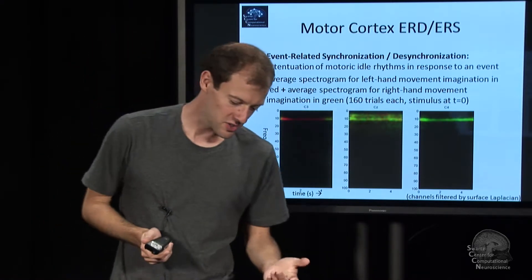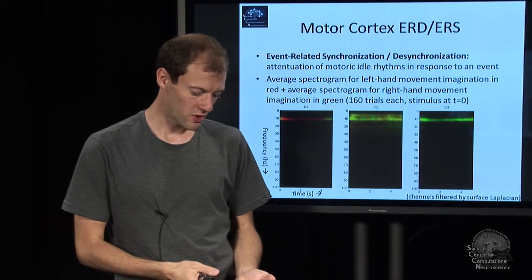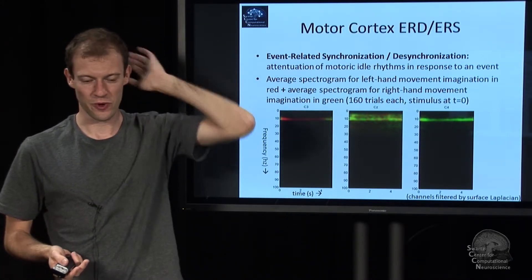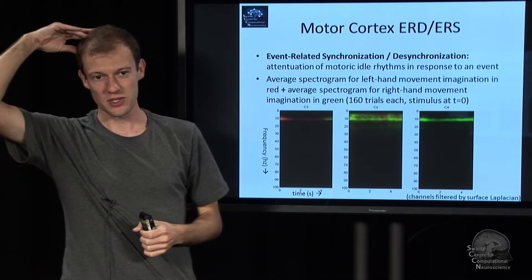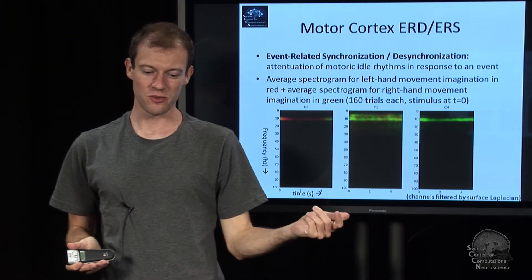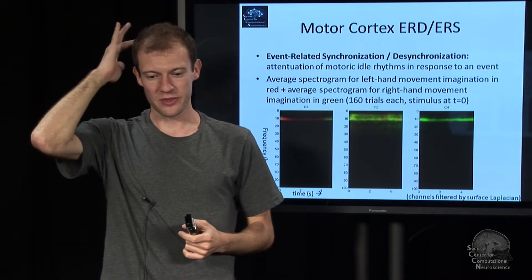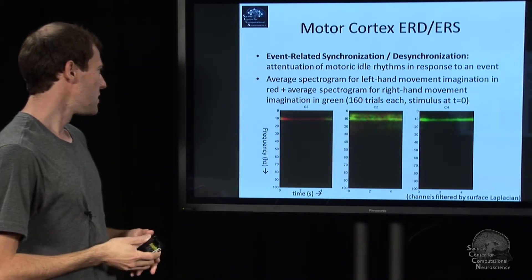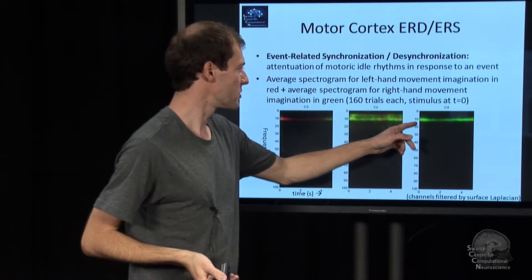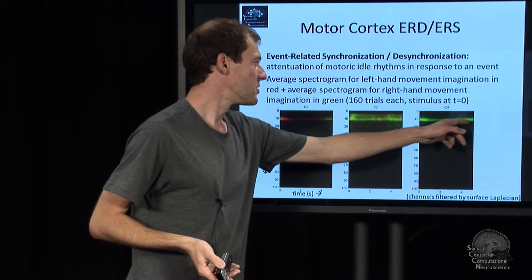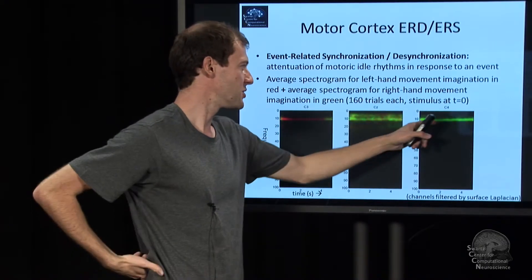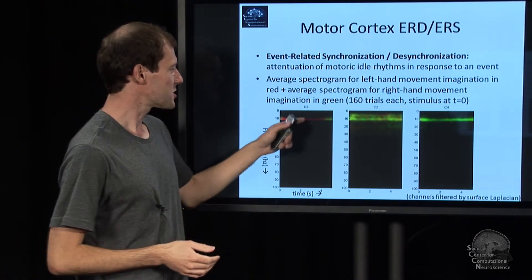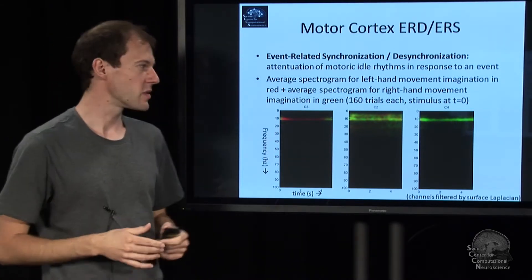It turns out that the nerves, as many people probably know, are actually cross-wired. If I imagine this hand movement, the nerves cross over somewhere in my head and neurons on this side are engaged. If I imagine this hand movement, idle rhythms on that side break down. So in that case, over C4, the red colored oscillation for that condition will go to zero and only green is left. This shows us approximately what frequency band one can really see something.